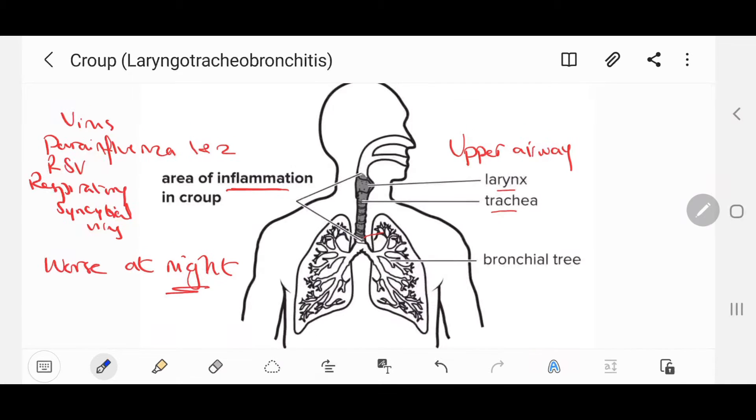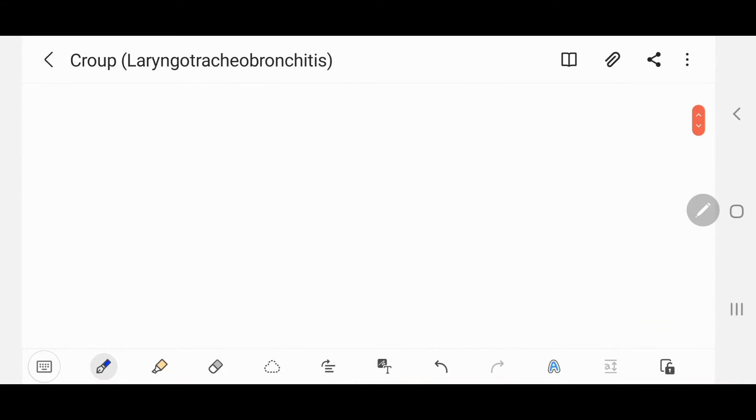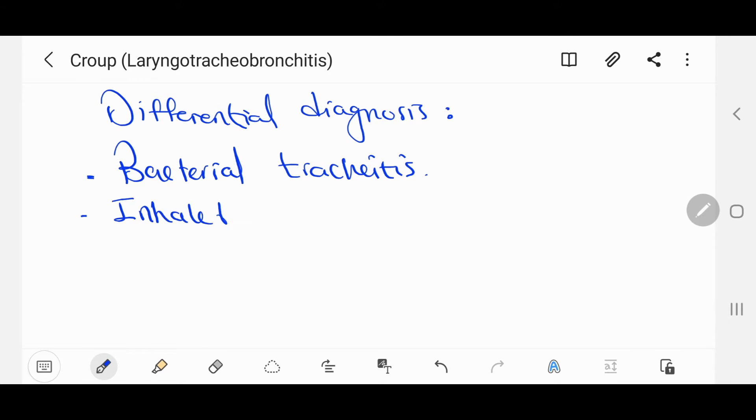The differential diagnoses in croup are very important because they resemble acute upper airway obstruction, which are bacterial tracheitis, inhaled foreign body, and anaphylaxis. If you need more details of acute upper airway obstruction, please leave a comment below.